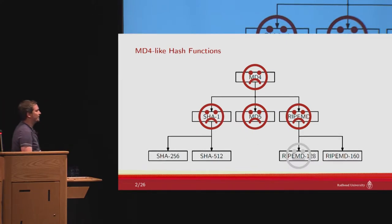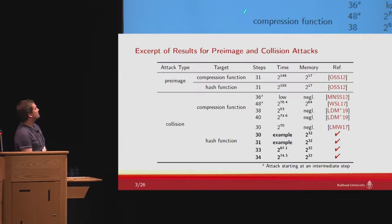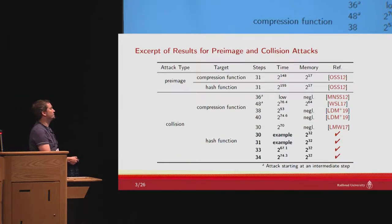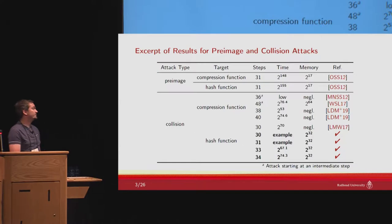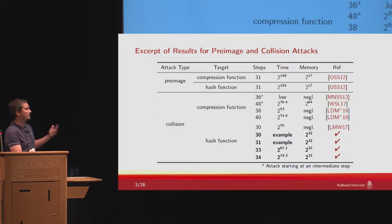Let's see the state for RIPE MD 160. It has 80 steps, and if we look at pre-image attacks, at most we can attack 31 steps. For collision attacks focused on the compression function, we can do up to 48 steps when not starting at the first step, and up to 40 steps starting from the first step. Before this paper, for collision attacks on the hash function, the best attacks covered 30 out of 80 steps with a rather high time complexity. In this paper, we present collisions for round-reduced versions reduced to 30 and 31 steps, with practical examples and theoretical attacks for 33 and 34 steps.